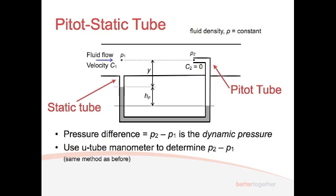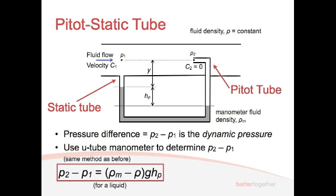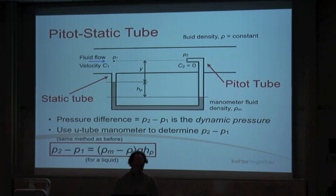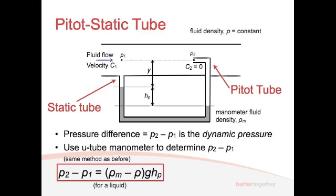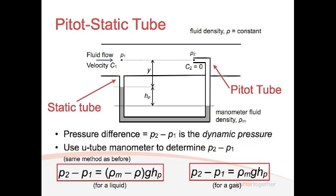We can use a U-tube manometer to determine P2 minus P1. We've got HP and the Y value. Working out the pressure at point A: that's the pressure of the manometer fluid multiplied by the height, plus the pressure of the fluid we're measuring multiplied by Y. So you get P1 + ρgY + ρ_m·g·HP. Rearranging gives the equation for P2 minus P1. For a gas, we neglect the density of the gas, and you just end up with the pressure difference equation using only the manometer density.